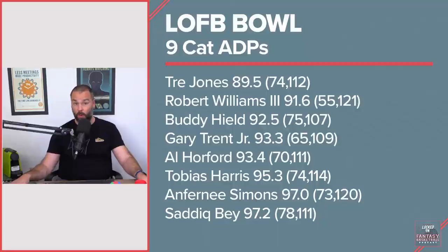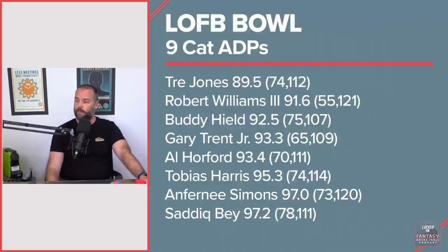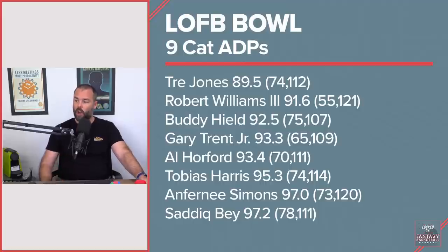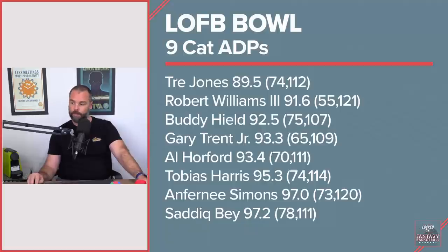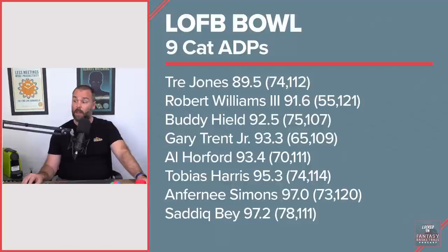Gary Trent at 93.3 — I'm coming around on those steals being harder to get and Trent maybe going a little bit higher if he maintains them. His range was 65 to 109. Horford at 93.4 with a 70 to 111 range; his low scoring needs to be taken into consideration. Tobias Harris — much different ADP here than other sites. His highest was 74 and lowest was 114 with an ADP of 95. He's ranked in the 50s on ESPN and Yahoo but no one wanted to go even into the top 70s to get him.